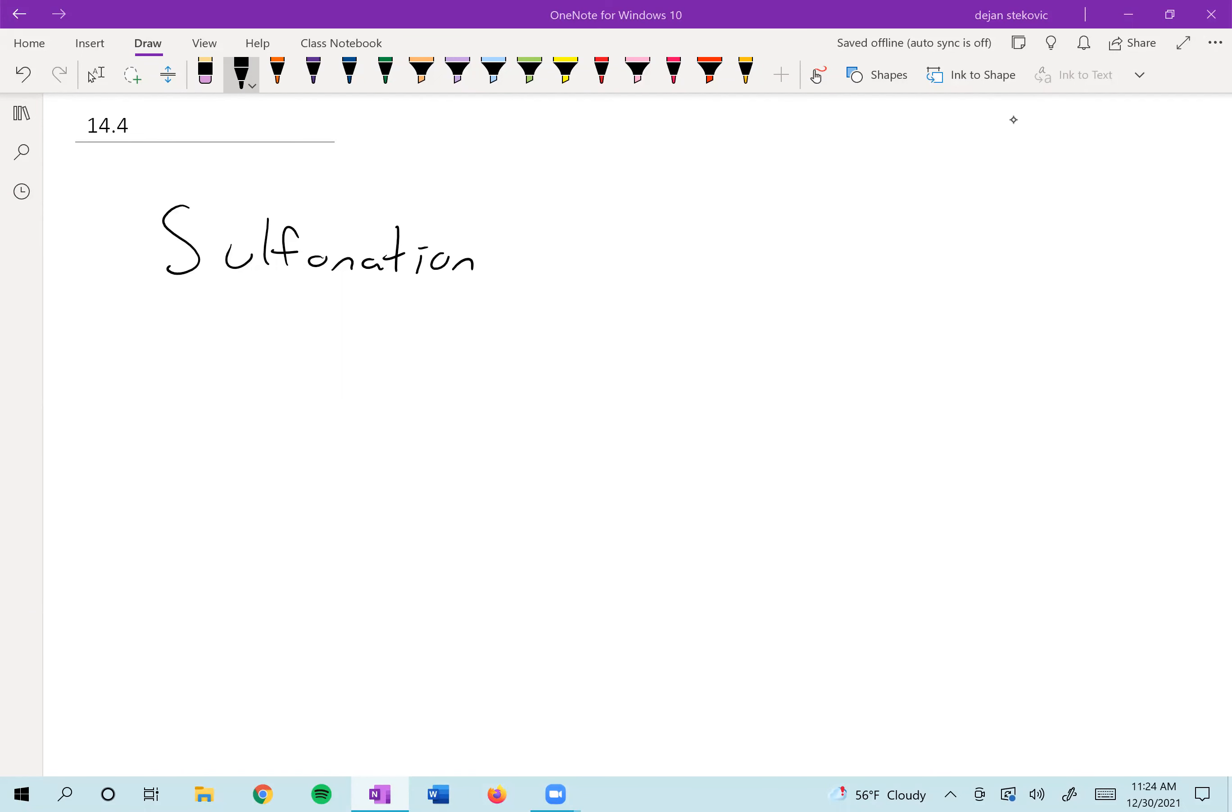Alright, so we can add alkyl halides to our benzene ring, but we can add other things as well. We can do what's called sulfonation to add a sulfonic acid group to our compound, and the way that this is done is through the use of fuming sulfuric acid.